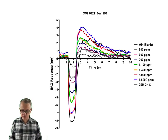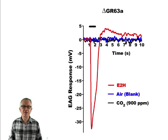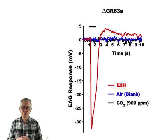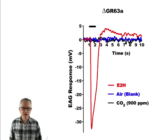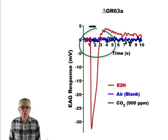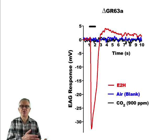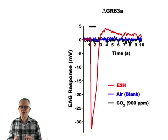We know that flies respond to that, but we wanted to make sure. We picked up the GR63A knockout generated by the Vosshall lab and tested it. The flies respond to 2E-hexenal normally, but the response to CO2 shows no difference from the blank. This confirms that the CO2 EAG response we are showing is indeed real, because without the CO2 receptor function there is no response whatsoever.